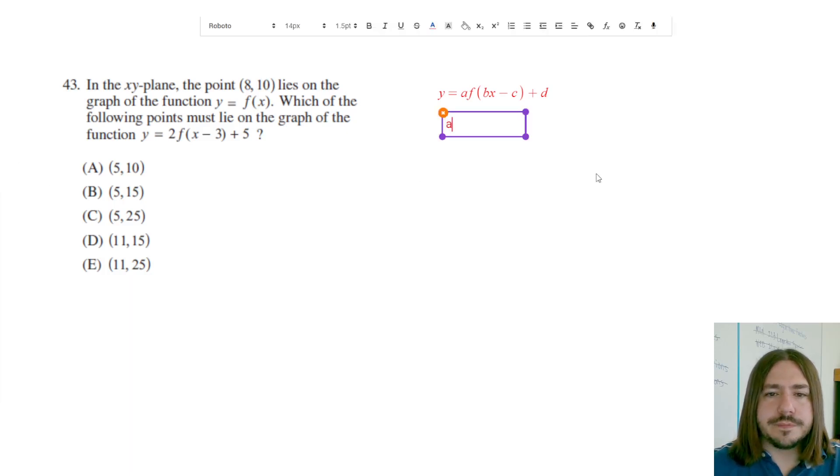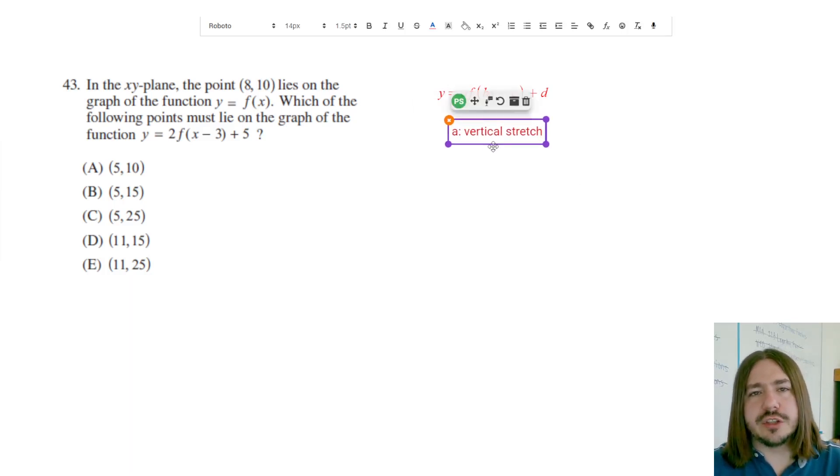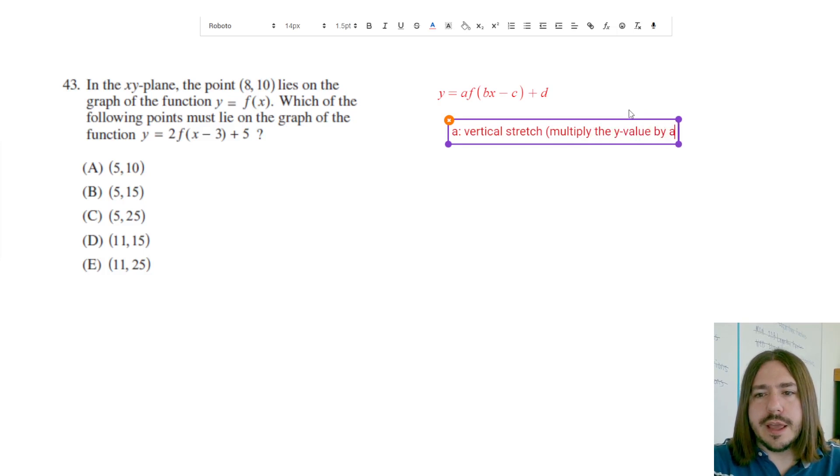So A is going to cause what we call a vertical stretch. So what it's going to do is it's going to stretch each of the coordinates away from the X-axis vertically. And essentially, if you have a coordinate and you want to know how this number affects the coordinate, you're going to multiply the Y value by A.